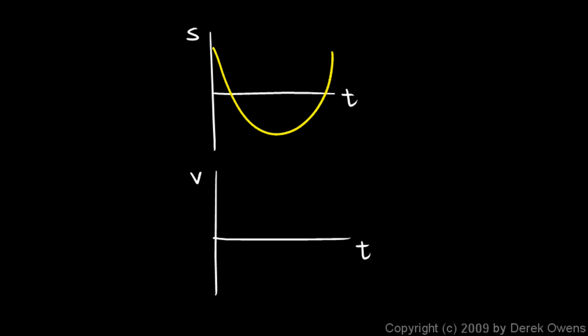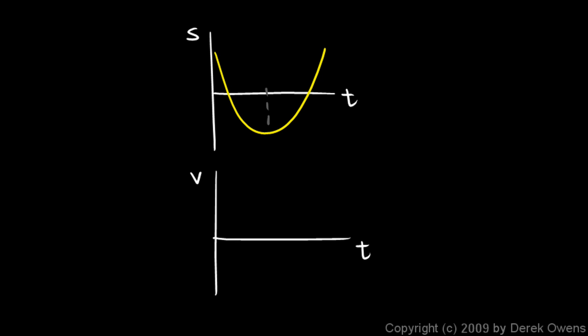Let's do another one. In this case, we have a parabola that looks something like this, and we want to graph the derivative. We'll make a graph down here that has, as its value at any point, the slope of the original graph. We mark this time right here when it's right at the bottom — that moment is obviously a critical point. Right at the vertex of the parabola, the slope is zero, so I know the velocity graph has to have a value of zero right there.